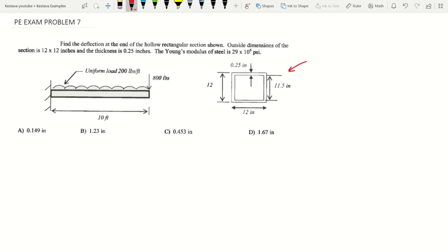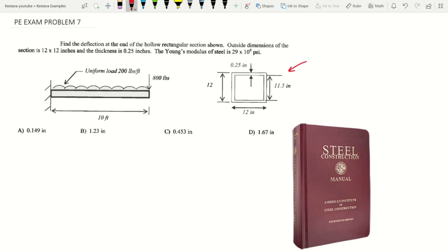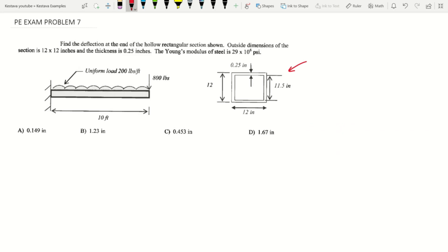What we're going to need to do is whip out our handy dandy steel construction manual, mine's the 14th edition. What you need to do in order to find deflection is flip open to table 3-23 in your steel manual, found on page 3-219.